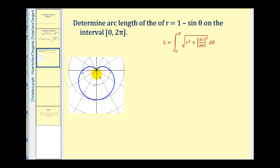This curve does have symmetry, so we could find the arc length of half of this curve and then double it to find the total arc length. Let's go ahead and do it that way.